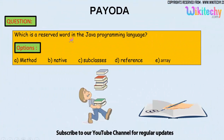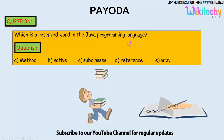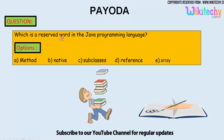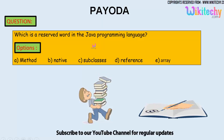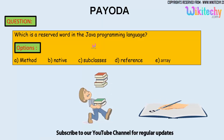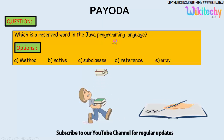Which is a reserved word in the Java programming language? That's the question. A reserved word — for example, 'int' is a reserved word. So we need to identify such a reserved word in Java. The options are: method, native, subclasses, references, and array.